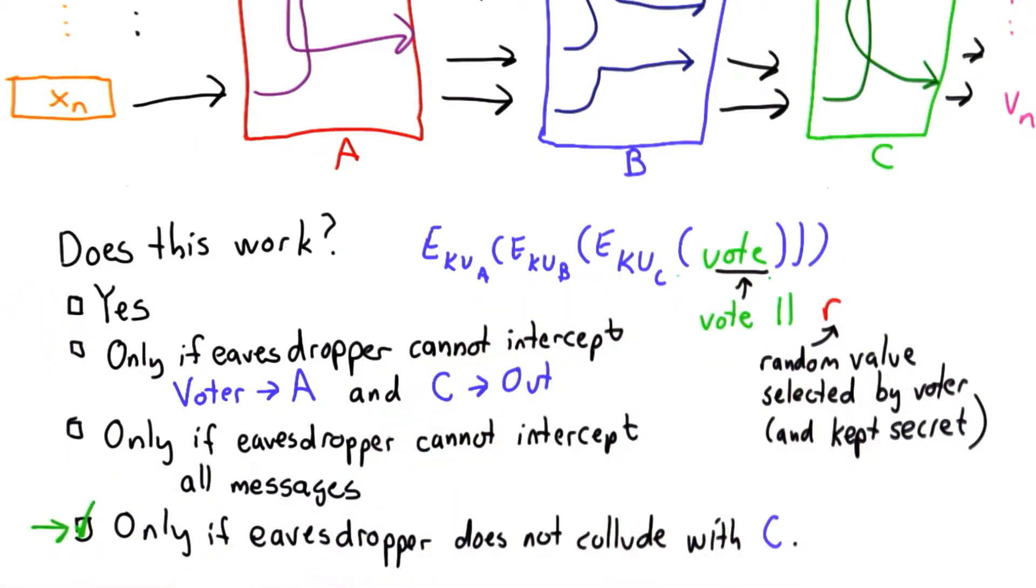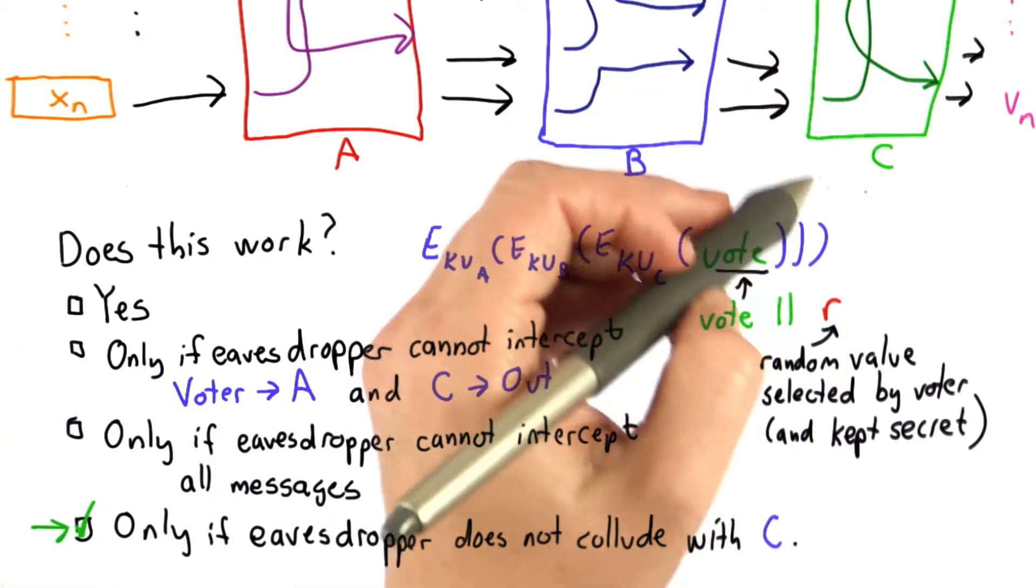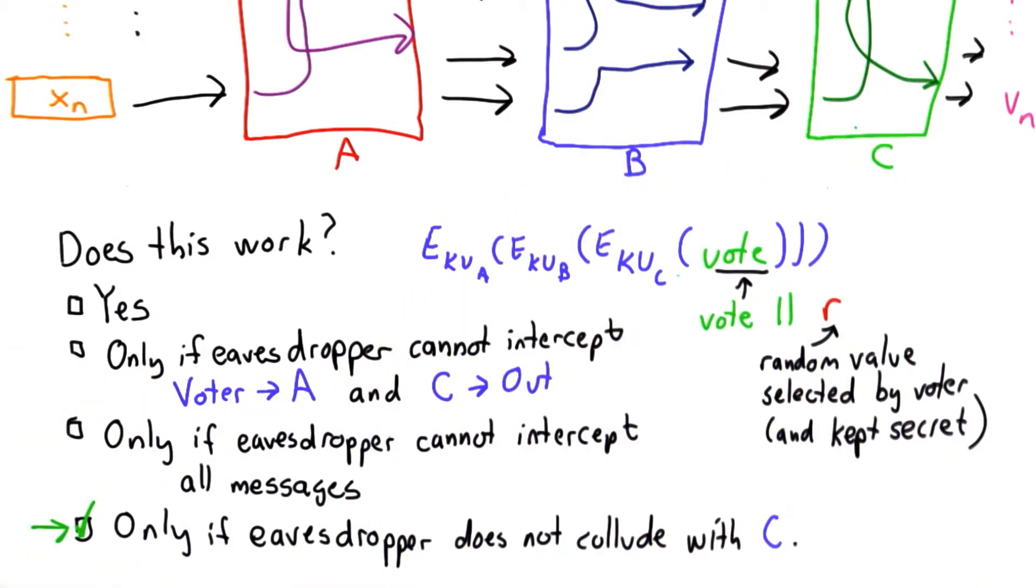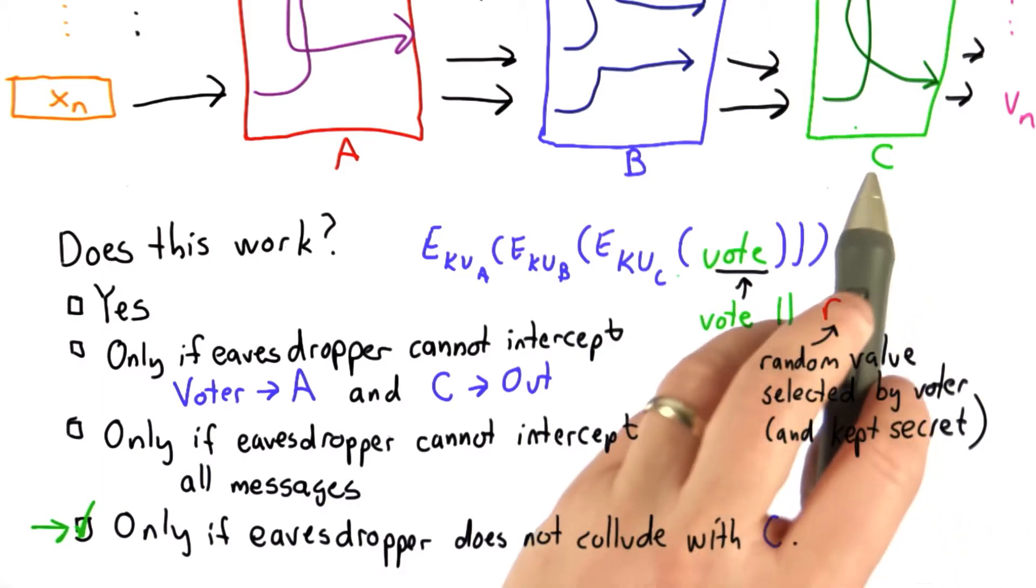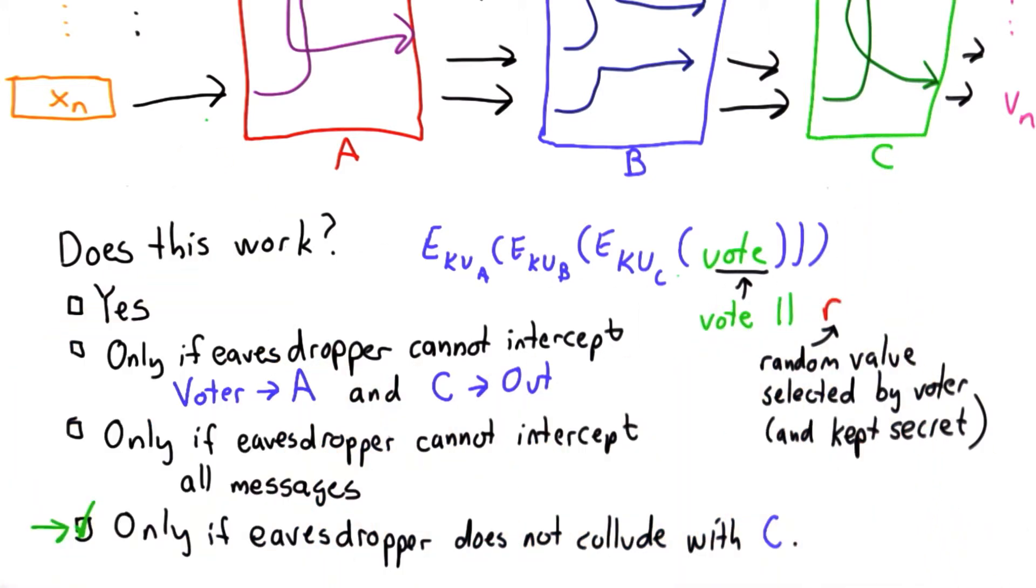So this is a weak system. So this solution doesn't work, at least not if our threat model includes an eavesdropper colluding with party C or C having the ability to eavesdrop on this link.